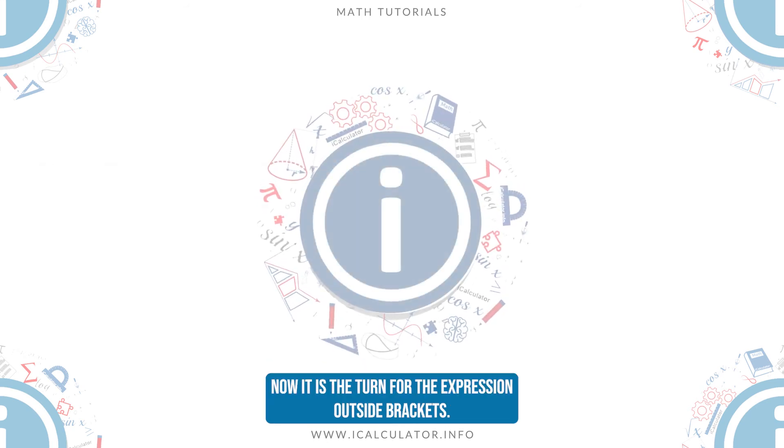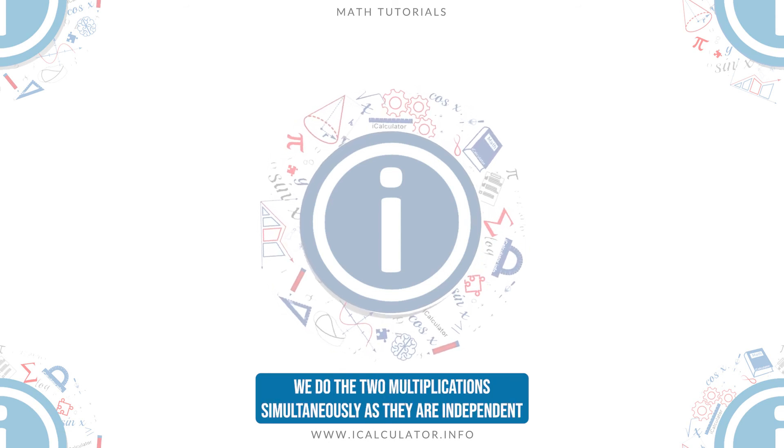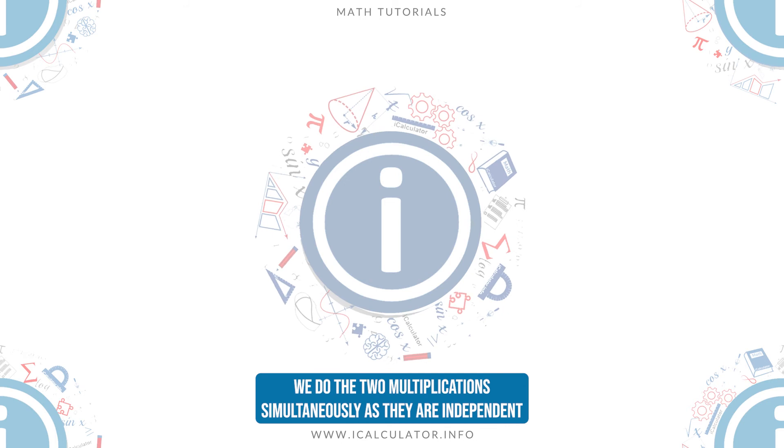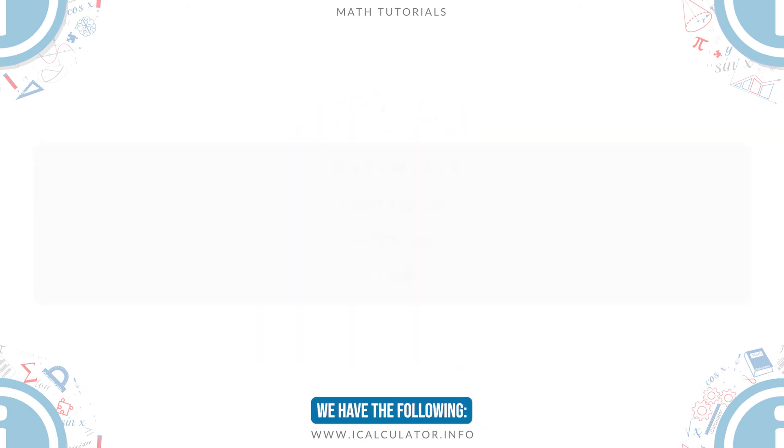Now it is the turn for the expression outside brackets. We do the two multiplications simultaneously as they are independent, they are not consecutive. We have the following.